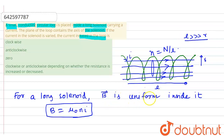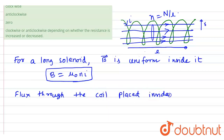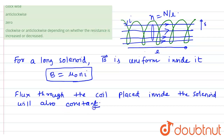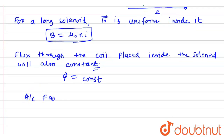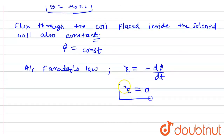For a long solenoid, as the magnetic field is uniform, the magnetic flux through the coil placed inside the solenoid will also be constant. So, if flux equals constant, then according to Faraday's second law, EMF equals minus dΦ/dt. If flux is constant, then EMF will be 0, and if EMF is 0, then induced current will also be 0.